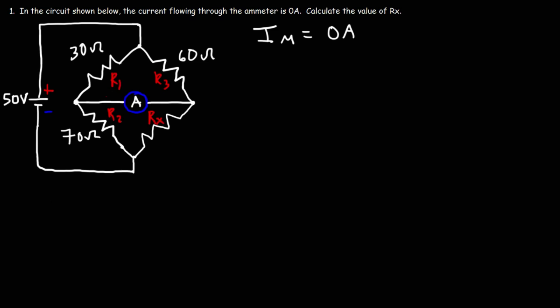Now if there's no current flowing here, that means that the voltage, or rather the potential at these two points are the same. So let's call this A, B, C, and D. So the electric potential at point C has to be equal to the electric potential at point D. So when that's the case, what we have is a Wheatstone bridge that is balanced. The resistors on the left balances the resistors on the right.